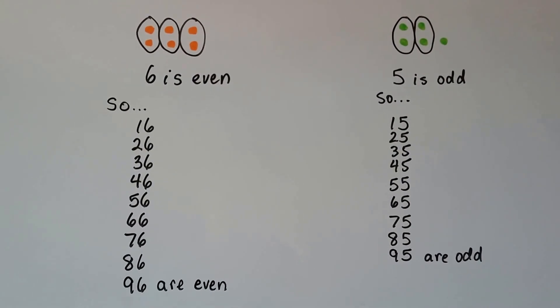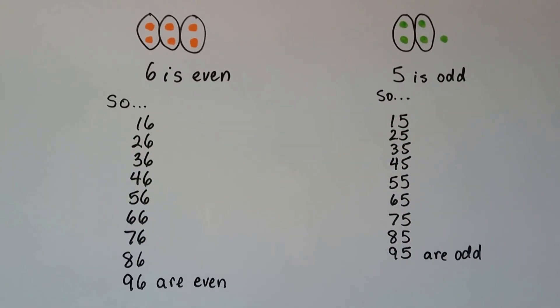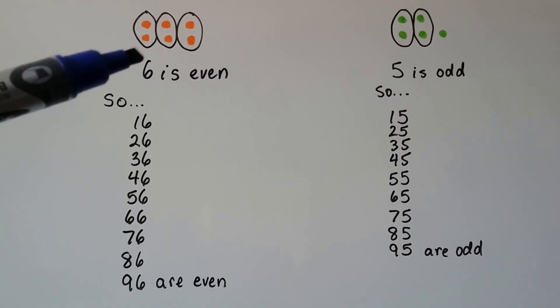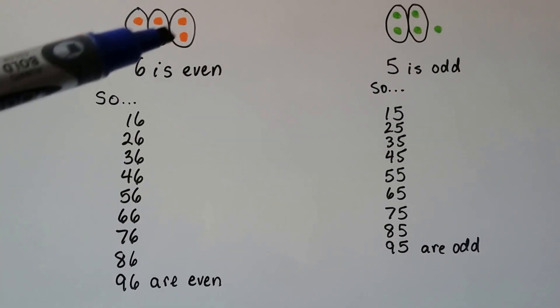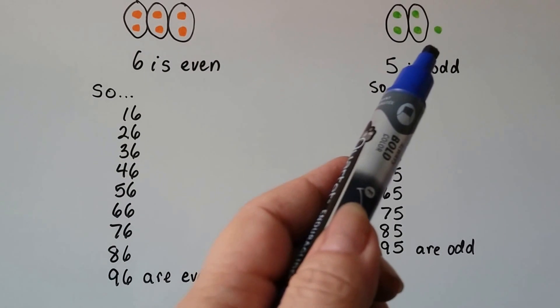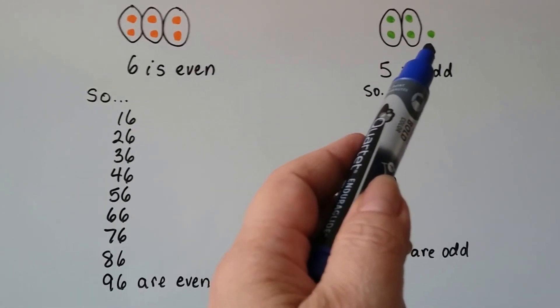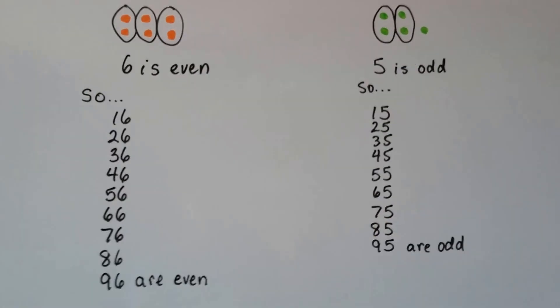No matter how big the number is, even if it's a million something, if it ends with a number that has none left over, then it's even. And if it ends with a number in the ones place that does have one left over after making pairs, then it's odd.